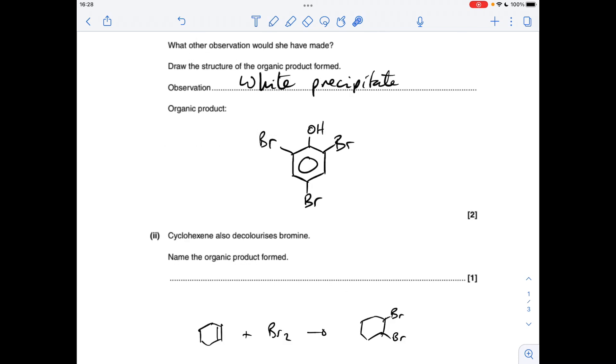And the final part of this bit of the question is the reaction between cyclohexene now and bromine, so there's the reaction, we're going to name this. So this is going to be 1,2-dibromocyclohexane.